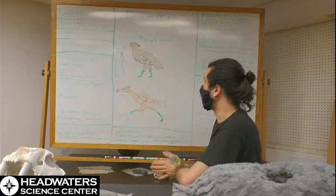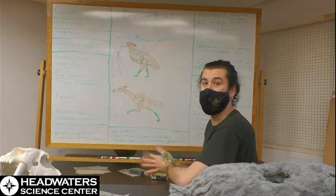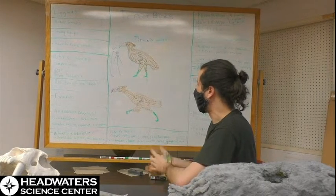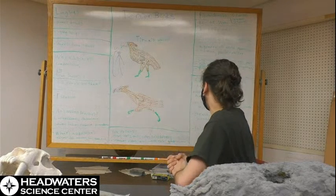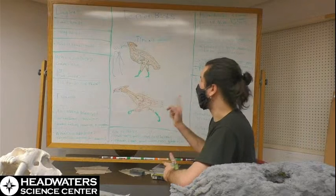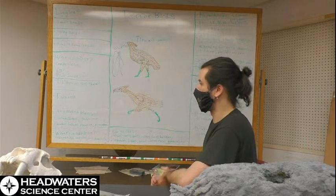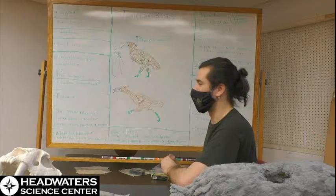These were carnivorous though. We do know from the beaks compared to modern bird beaks they have the sharpened edge and that hook bill that a lot of carnivorous birds today have. Although kind of a cool thing, they're not related to modern flightless birds and we'll get into who they're related to in a little bit.